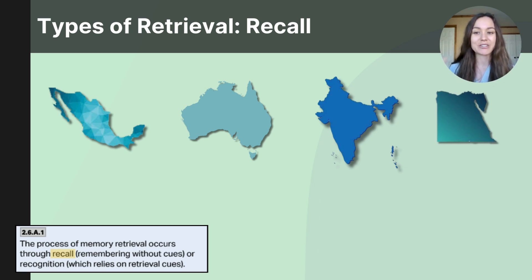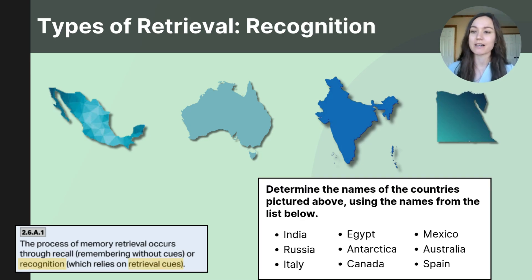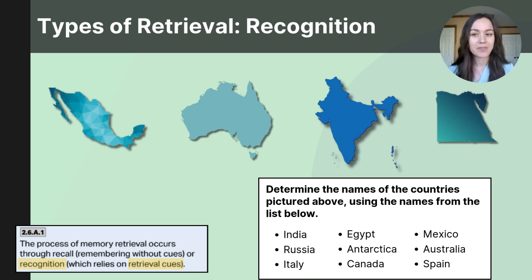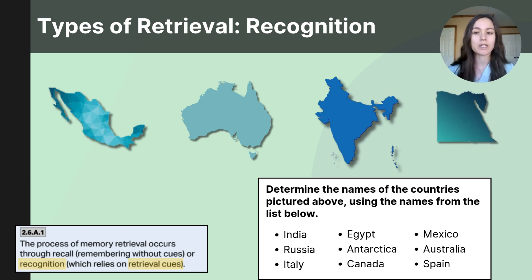Could you recall the names of these four countries? Now let's try again. There's a box at the bottom of the screen that says: determine the names of the countries pictured above using the names from the list below. You now have a list of nine country names — can you identify them? This process of memory retrieval is referred to as recognition. You're still using memory retrieval by pulling information out that you've previously stored, but you're utilizing a retrieval cue to help you do it.